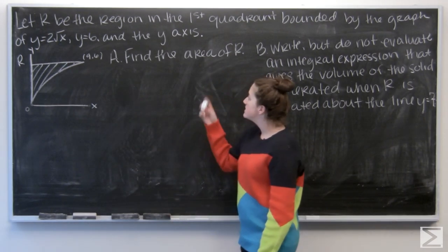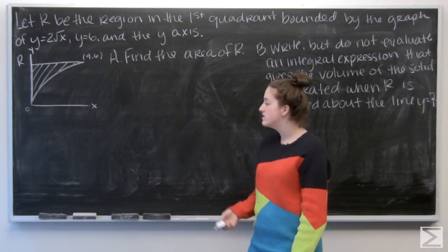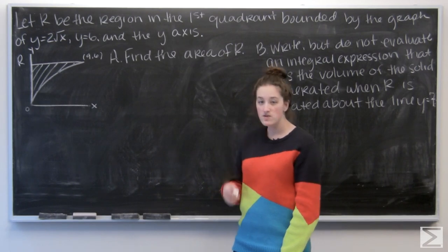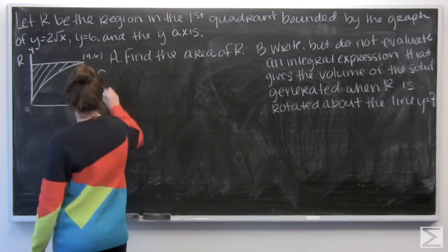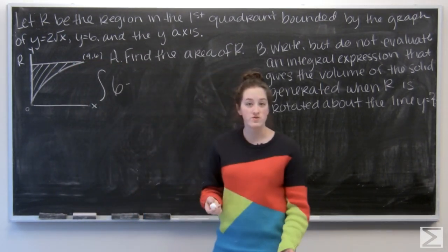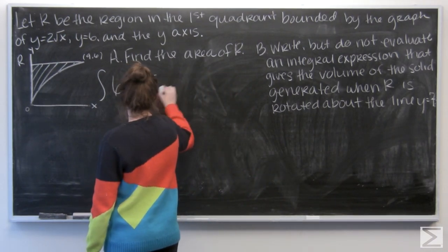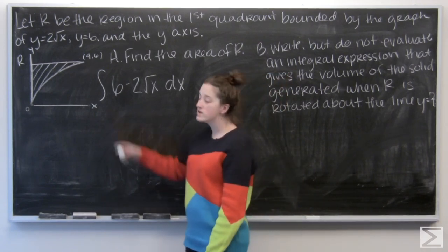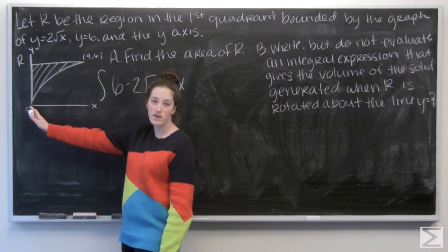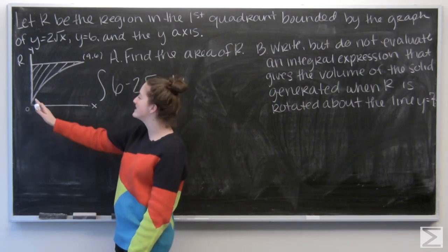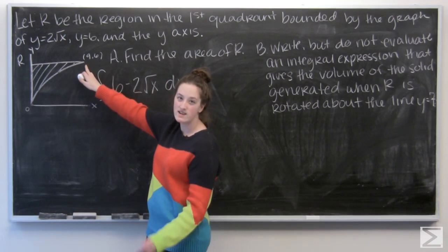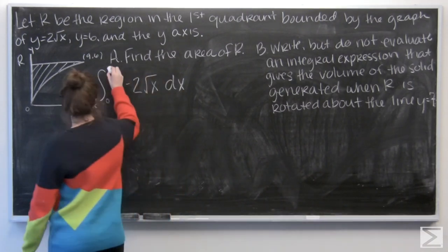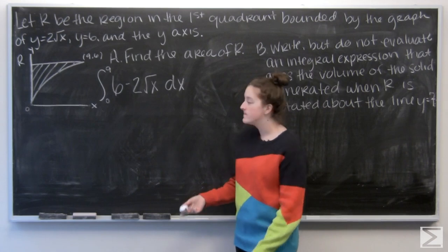The first part asks us to find the area of this region. When we find the area of a region, we integrate the top function minus the bottom function. Our top function is 6 and our bottom function is 2 square roots of x, integrating with respect to x. Looking at the picture, x equals 0 is one bound, and the intersection of y equals 6 and 2 square roots of x is at (9, 6), so our x bounds go from 0 to 9.